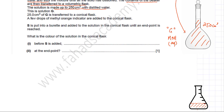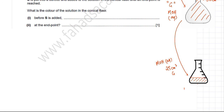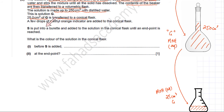25 cm³ of Solution G is transferred to a conical flask. A few drops of methyl orange indicator are added to this flask. Solution S is put into a burette and added to the conical flask until an endpoint is reached. Solution S is 0.095 mol/dm³ of sulfuric acid (H₂SO₄).